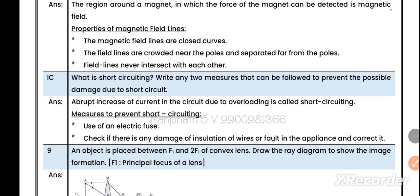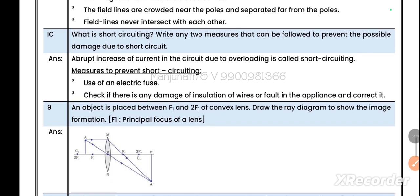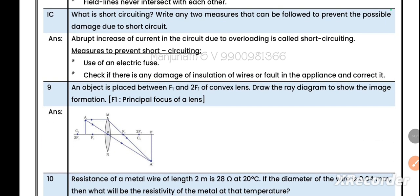Another question: what is short circuiting? Write any two measures that can follow to prevent the possible damages due to short circuit. The abrupt increase of current in the circuit due to overloading is called short circuiting. Measures to prevent short circuiting: use an electric fuse, check if there is any damage of insulation of wires or fault in the appliances and correct it.